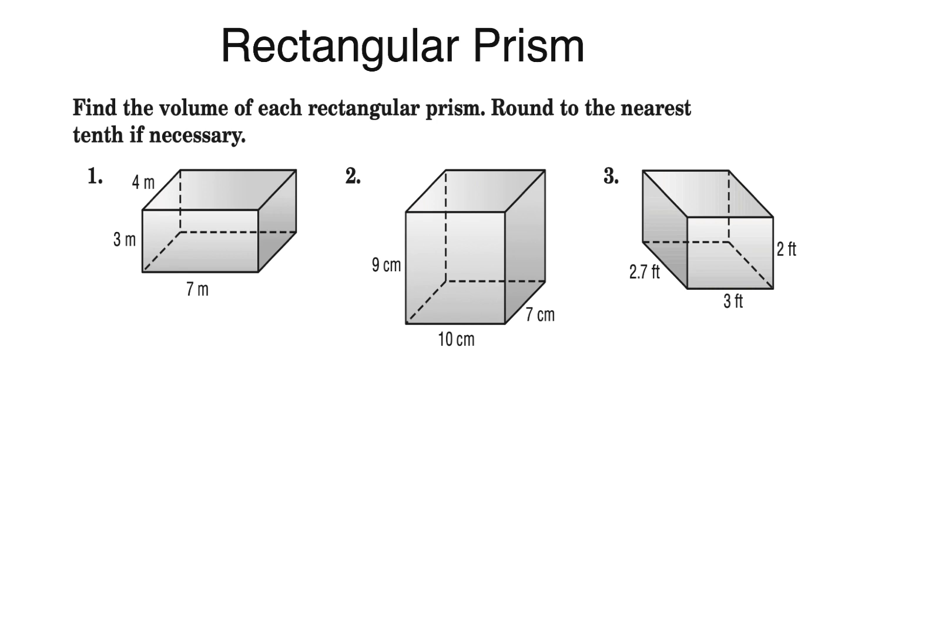In this foundational video we're going to start with the rectangular prism, or sometimes in my class I call it a rectangular container. We have to find the volume of each rectangular prism and depending on the dimensions they give us, we have to round to the nearest tenth if necessary. This particular formula is not given to you on the TAKS test. The volume of a rectangular prism is the length multiplied by the width multiplied by the height.